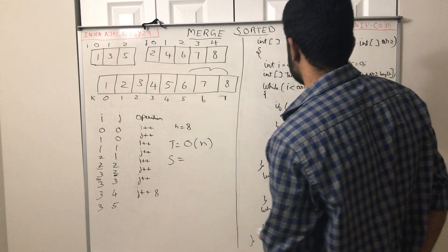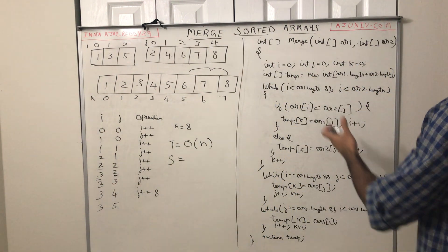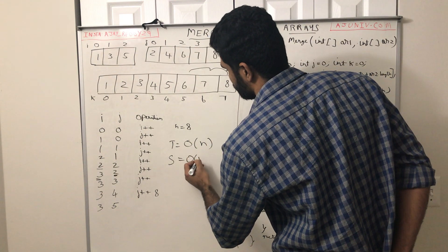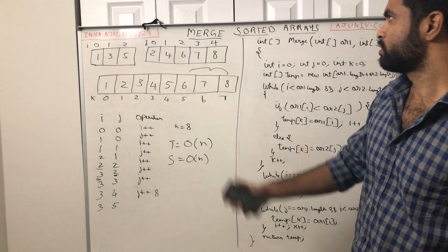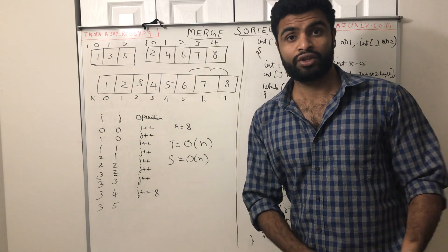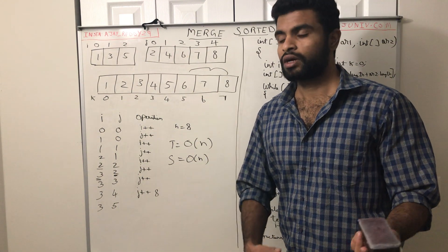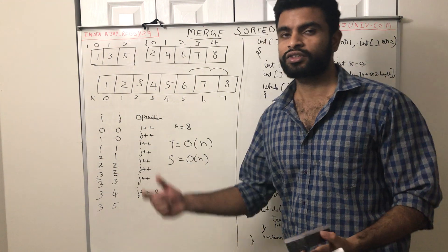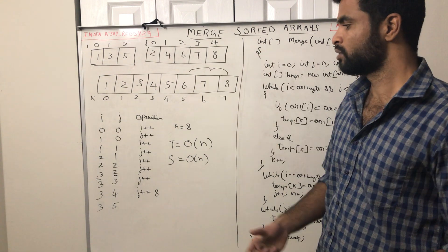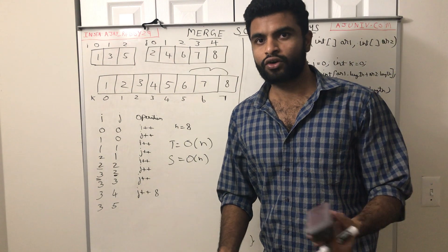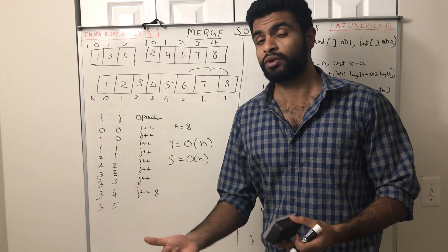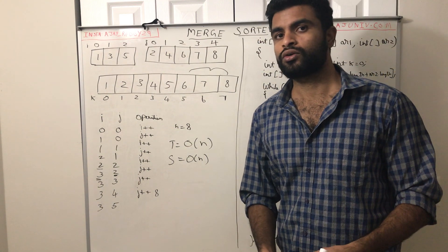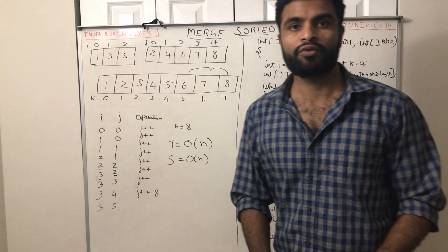So that is our solution for merging two sorted arrays. I will post the code and the merge sort description in the description of the video. Thank you for watching my video — if you have any questions, please leave them in the comments.